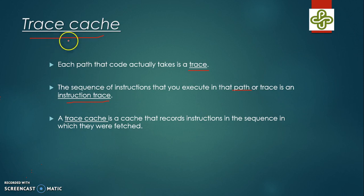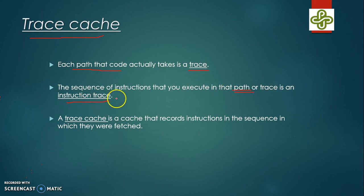Now let us understand trace caches. Each byte stored in the same cache line follows spatial locality, but programs do not execute in sequential order because code has branches — so they take different paths. Depending on the branch taken, there may or may not be more branches. Each path that code actually takes is called a trace, and the sequence of instructions executed along that path is known as an instruction trace. A trace cache records instructions in the sequence in which they were fetched.